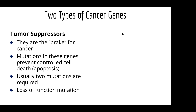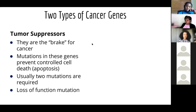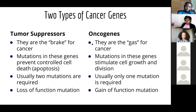Now let's talk about the two types of cancer genes. The first are tumor suppressors, which function as the brake for cancer. If you have mutations in tumor suppressor genes, they stop the controlled cell death called apoptosis, preventing cell death from happening. In order to fully turn that tumor suppressor into a cancer gene, you have to mutate both copies — turn off both brakes.